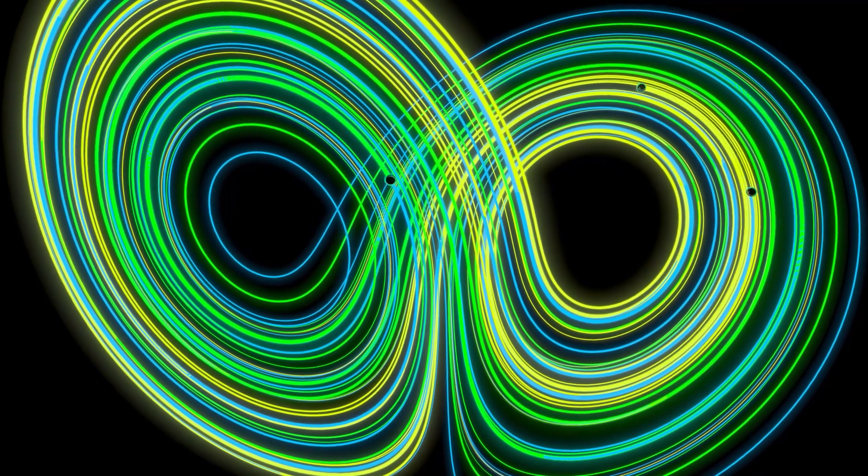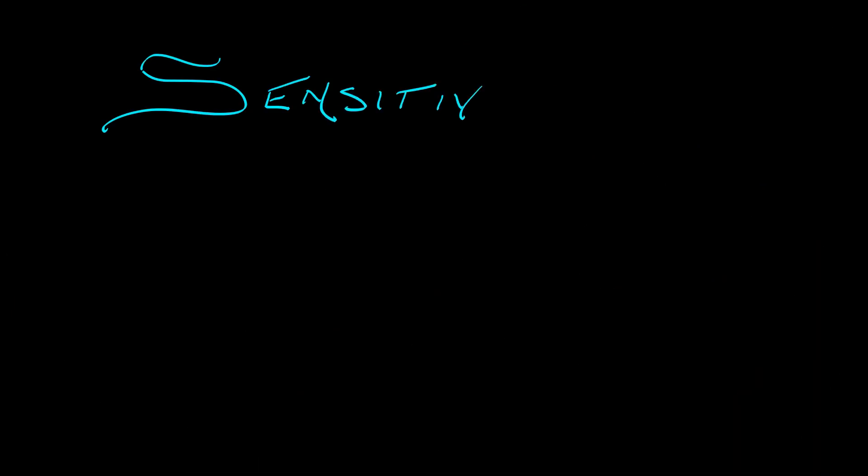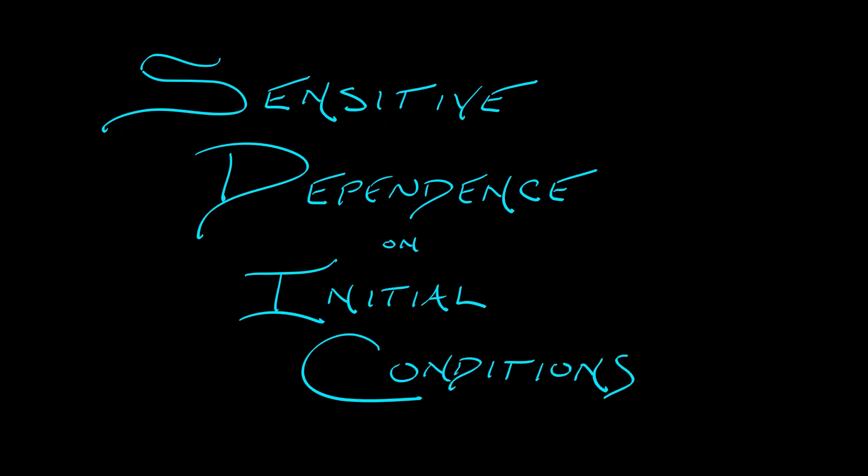This is something that we can see when we simulate it. This is a phenomenon that is called sensitive dependence on initial conditions, and this is really at the heart of what a formal definition of chaos is.